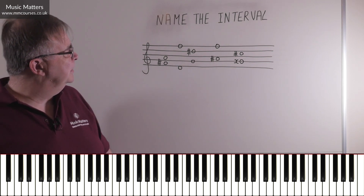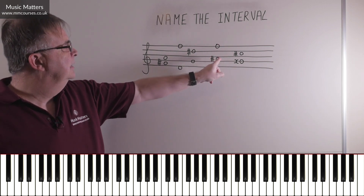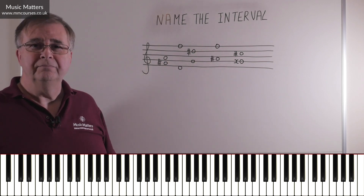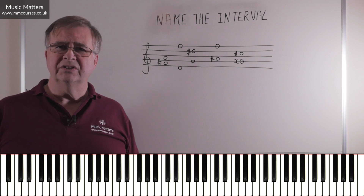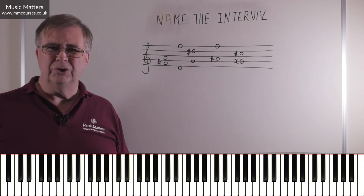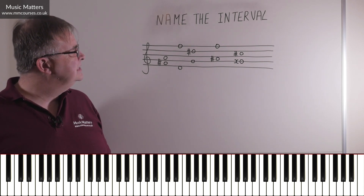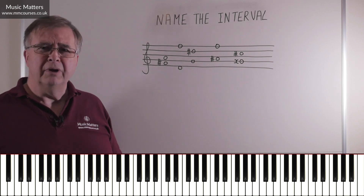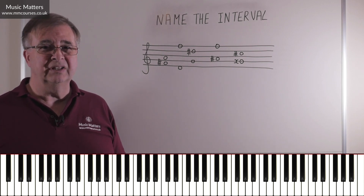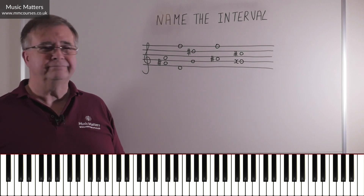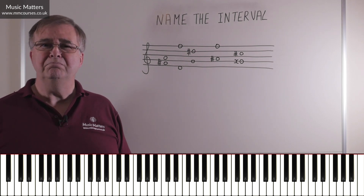Let's have a look at the next one. We count: A at the bottom, F at the top — one, two, three, four, five, six — so this interval must be some kind of sixth. For those who want to go further, it's a little bit tricky with A-sharp at the bottom. I'll give you a moment to pause and think about it. This is a diminished sixth — a diminished sixth.